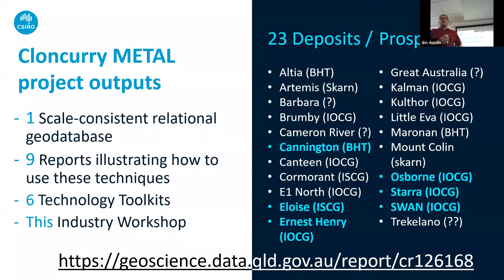The blue ones on the map are the main reports from the main deposits worked on for this current study. The ones in white were worked on in the earlier study called Uncover Cloncurry. Amazingly we did 20 deposits in one year and then took three years to do six — but we did a lot more work on those six. The six are probably the main deposits in the Cloncurry district.